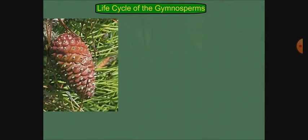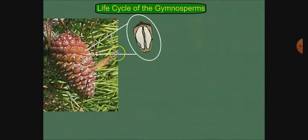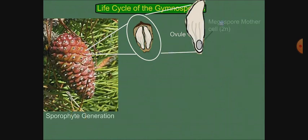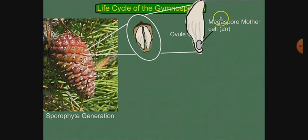Now we look at the female cone. On the female cone there are seeds and scaly leaves. In the ovules, the megaspore mother cell is diploid. It will undergo meiosis, producing megaspores from the megaspore mother cell.